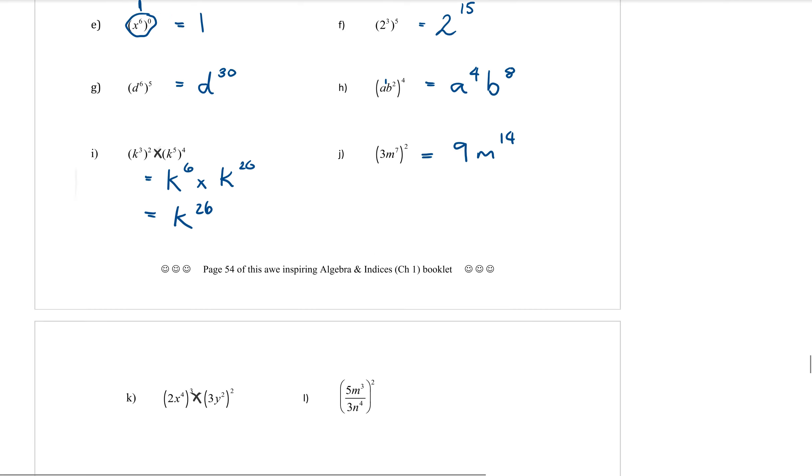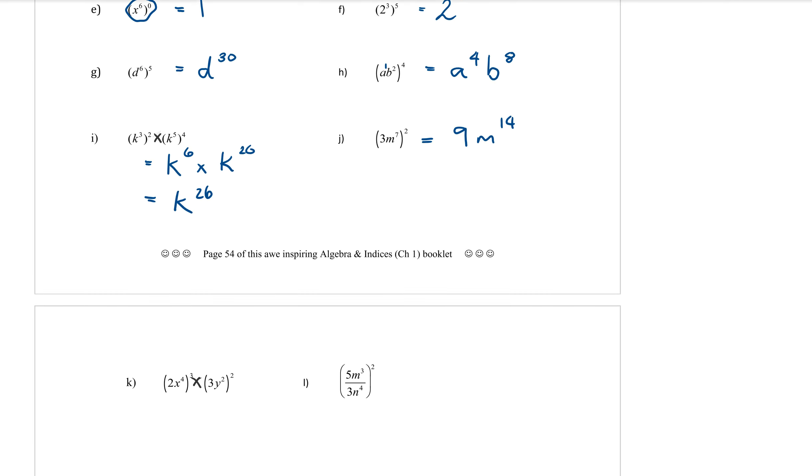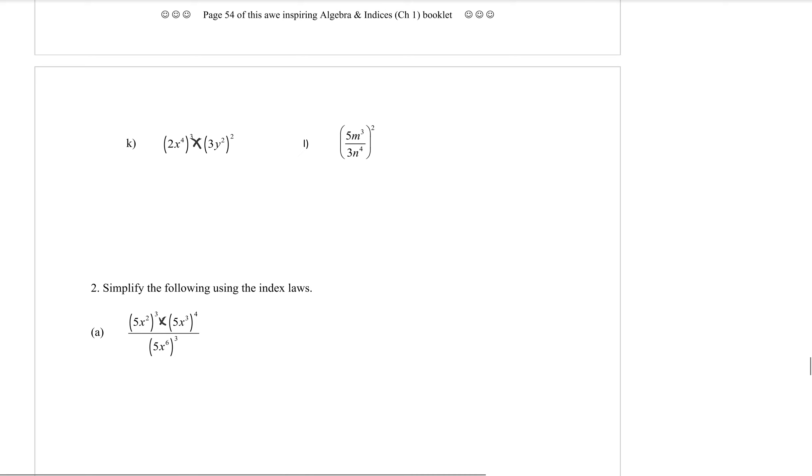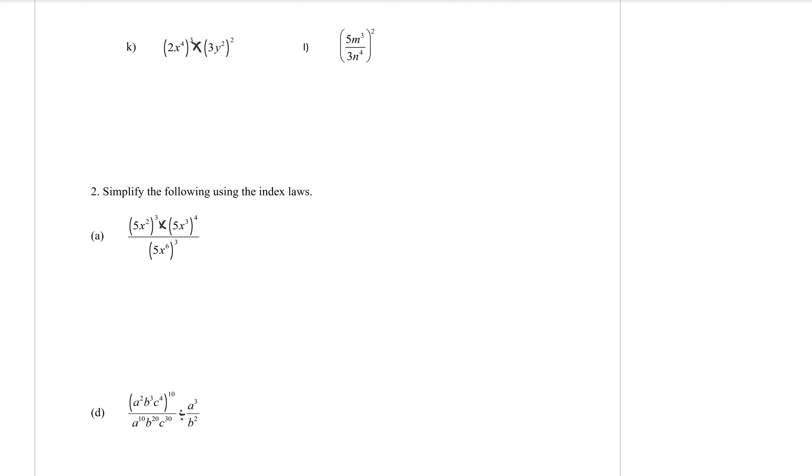On the next page, we have a couple more. Getting a little bit harder. Like always, expand out your brackets first. So in these ones, we have numbers out the front again. So the two to the power of three. What is two to the power of three? Nine. Oh, we're done. Six. Nope.